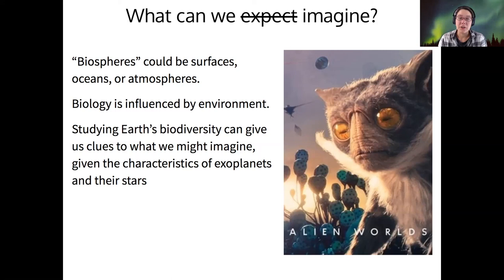So when we think about what types of life we might expect to find on exoplanets, it's kind of up to your imagination, right? So we can think of biospheres here as being life on the surface or life in the oceans, but the atmosphere could be part of the biosphere too. You can have living things that are restricted to only living in their atmospheres. And since biology is really influenced by environment, then we can study Earth's biodiversity to give us clues as to what we might imagine could exist on other exoplanets.